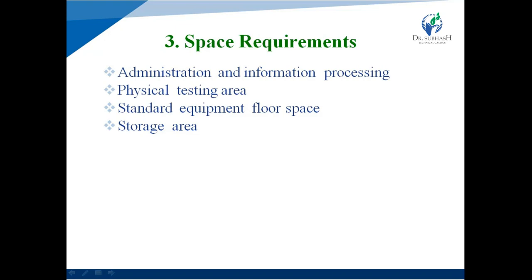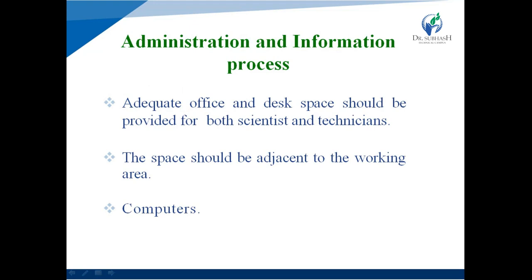The next consideration is space requirements, which has four types: administration and information processing, physical testing area, standard equipment floor space, and storage area. The first is administration and information processing space, the second is a separate physical testing area, the third is standard equipment floor space, and the last is storage area for raw materials or final products.